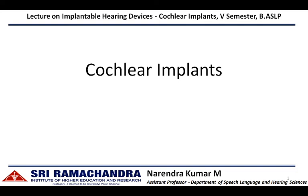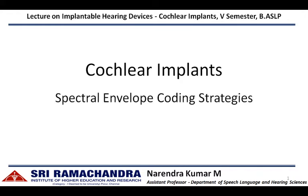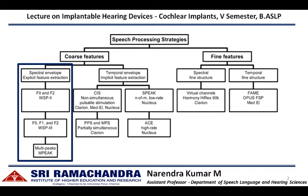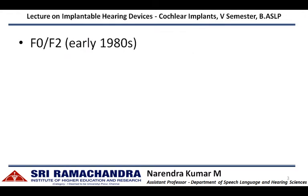In this lecture, we are going to discuss various speech coding strategies that use spectral envelope information for converting the acoustic signal into electrical signal in cochlear implants. In the previous video, we discussed different classifications of speech coding strategies. Here, we focus on those that use spectral envelope information — specifically F0-F2, F0-F1-F2, and multi-peak strategies. These are also called feature extraction strategies, as they use acoustic features of speech signals like formants to represent an incoming signal in a cochlear implant.